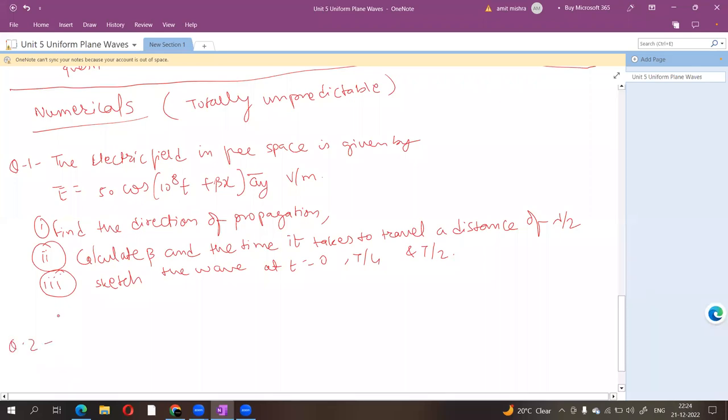Second question is, if E is equal to 800 cos 10 raised to power 8t minus beta y az volt per meter. Find beta lambda h at p 0.1, 1.5, 0.4 at t is equal to 8 nanoseconds.